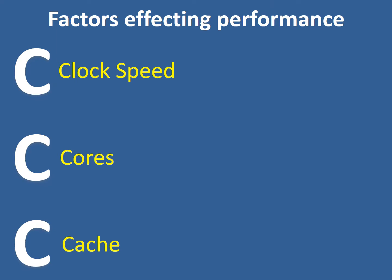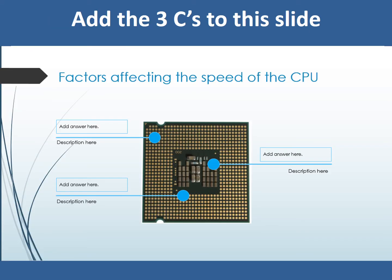The main three things that affect the performance of a CPU are clock speed, cores and cache. There are other things that can affect performance, such as the manufacturer who made the CPU. They might use different quality components, but these will have minimal effects compared to clock speed, cores and cache. Task number one is to find this page in your workbook and list the three things that affect the performance. As we go through these, add a description of how each affects the speed of the CPU.